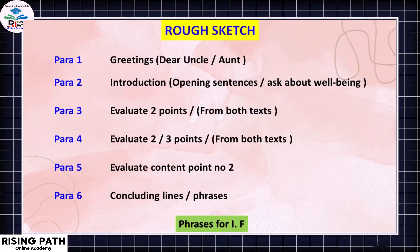Our next step is to make a rough sketch. First, we write the greetings and salutation — we are writing to a relative, uncle or aunt. Paragraph one is the introduction with opening sentences asking about their well-being. Paragraph two covers our content points — the evaluation — we have to evaluate two to three points maximum from the texts.